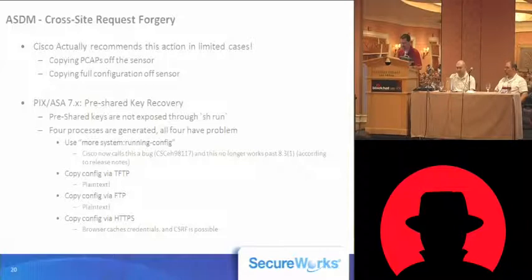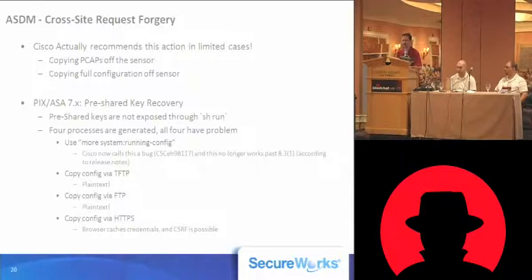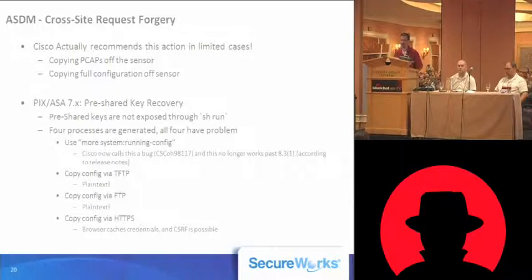Cisco has kind of changed their tune on this — they're saying now that this is a bug. So they've got one article that says this can be a way to recover pre-shared keys, and then they've got a bug saying that what they told you to do in that other article is actually bug behavior. The release notes for 8.3.1 state that it's been fixed and no longer works, though I haven't actually confirmed that.